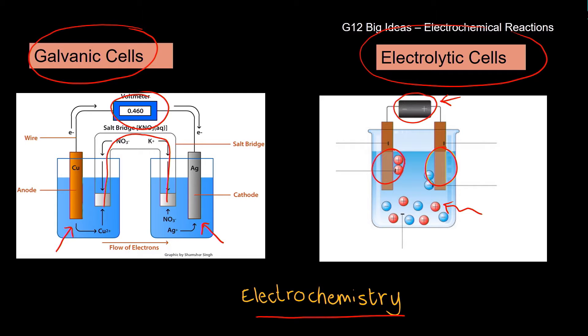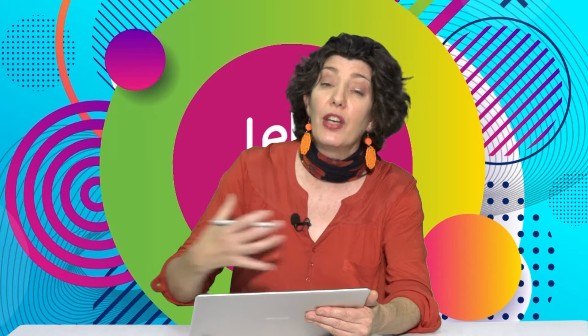The electrodes are called the anode and the cathode. We have redox reactions in both — there is an oxidation half reaction and a reduction half reaction. There is a giving or loss of electrons and a taking of electrons. So we classify the substance that is oxidized as the reducing agent and the substance that is reduced as the oxidizing agent.